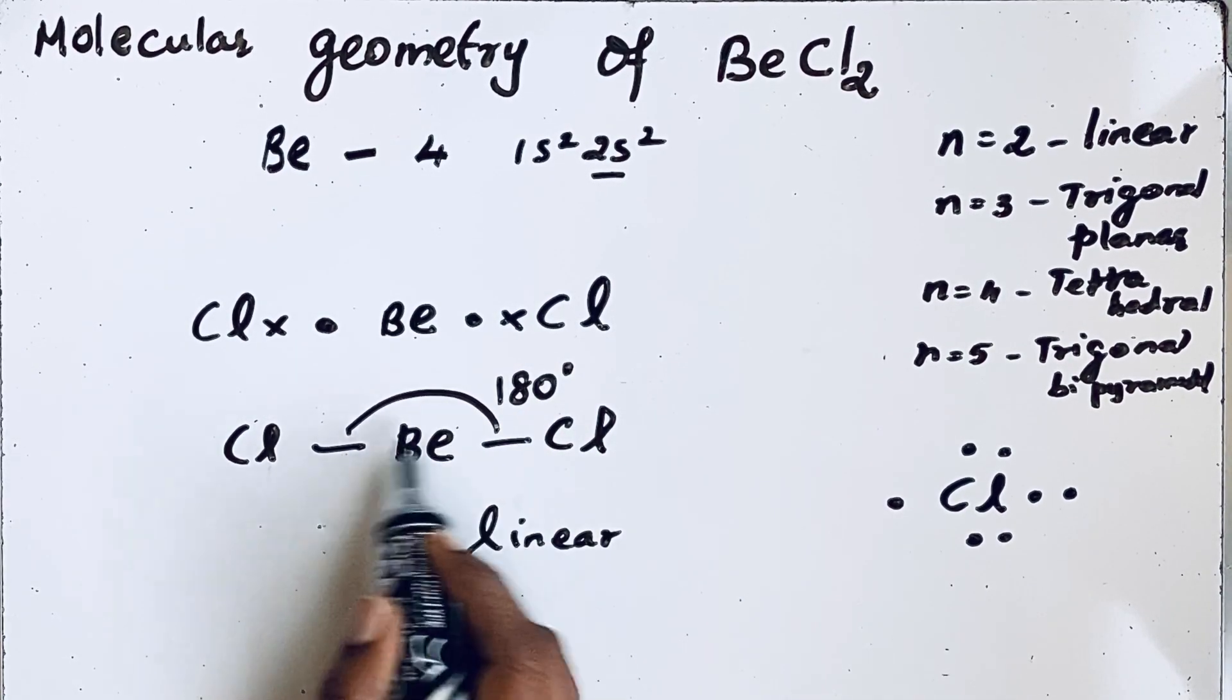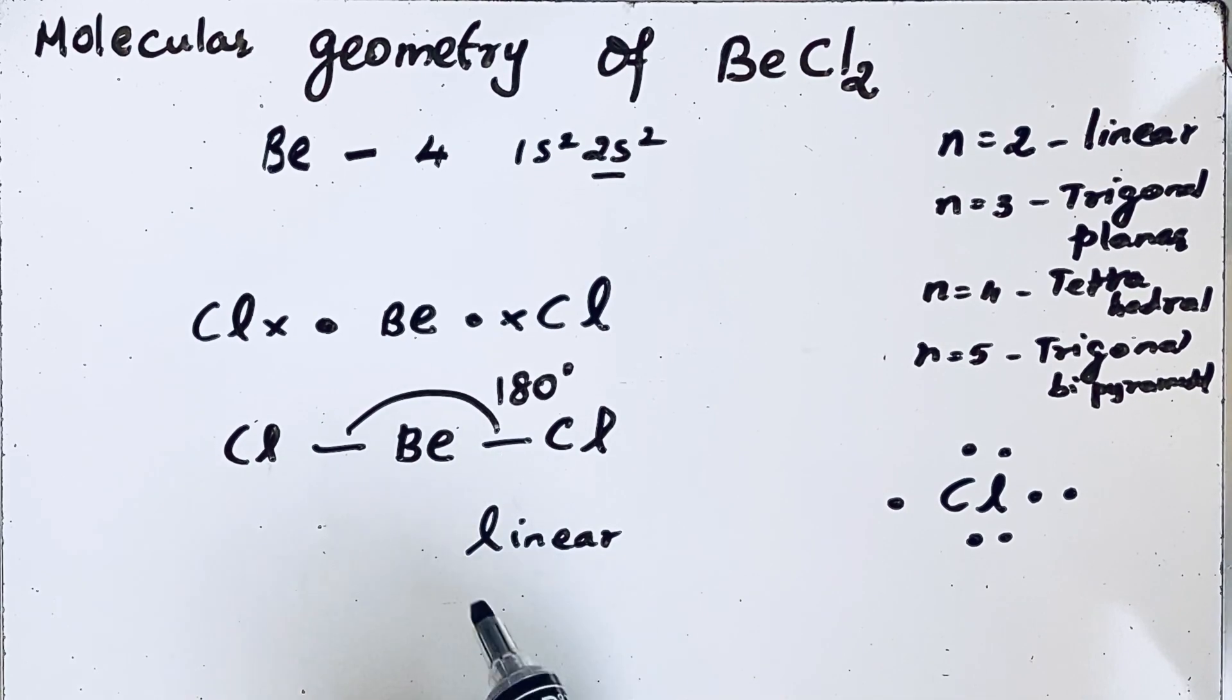The electron pairs try to maximize the distance between them, resulting in a linear geometry. Thanks for watching.